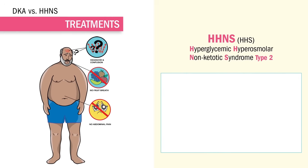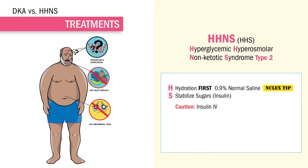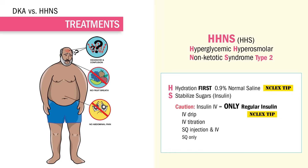For HHS treatments, remember the acronym HS. H: we always treat hydration first — both DKA and HHS, hydration first with 0.9% normal saline. We can also do hypotonic fluids, but that's not as common on the NCLEX. S is to stabilize the sugar with insulin — again, only regular insulin is ready to go IV. Just like DKA, we correct sugars slowly with hourly blood sugar checks and insulin going from IV bolus to subcutaneous injections. We land that sugar slow. As for potassium in HHS — adding potassium applies to DKA specifically.